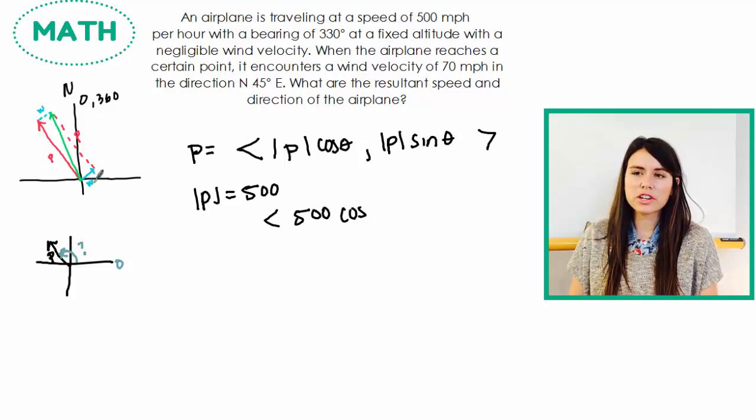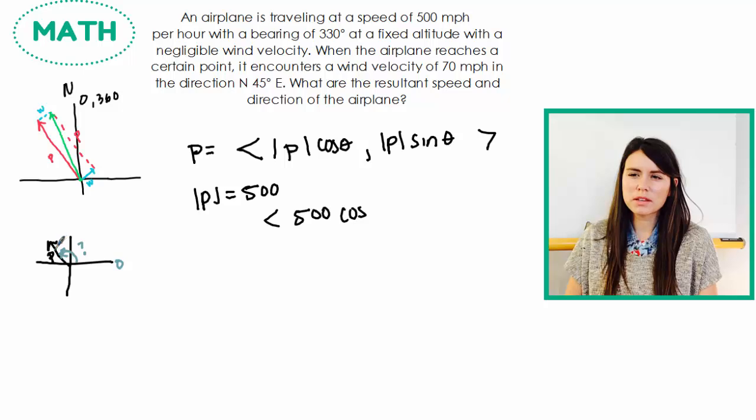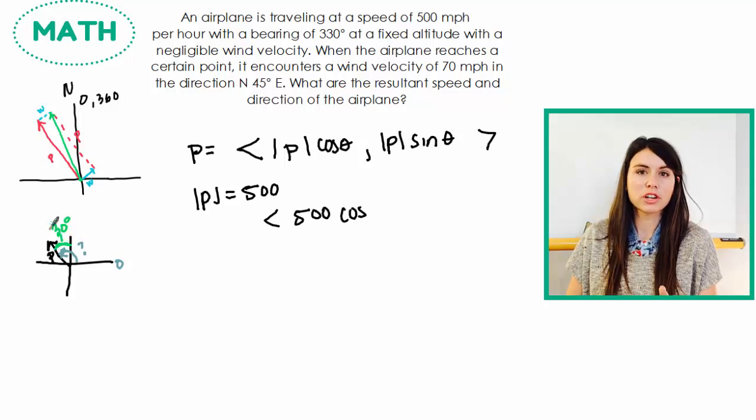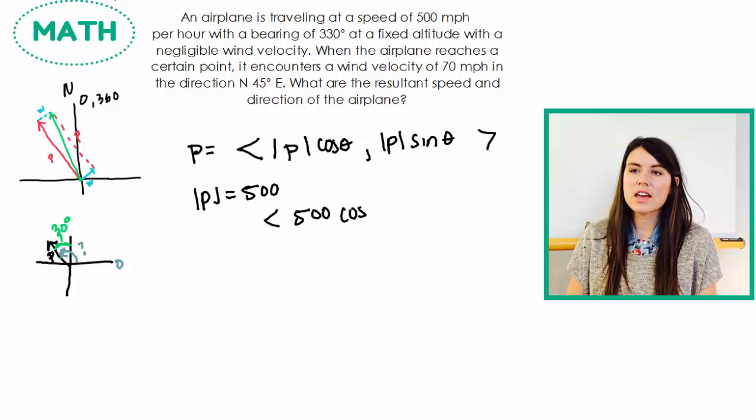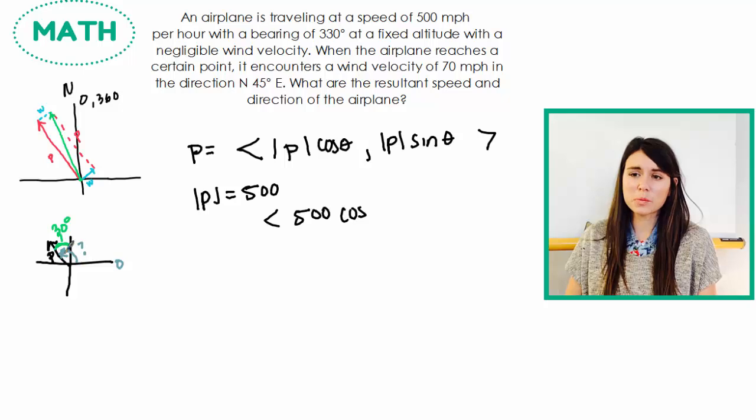So here's kind of the way I think of it. My bearing was 330 degrees. So this piece right here that I'm drawing in green, this is 30 degrees. Because I traveled 330 degrees and then to get back here to north, I would have had to go 30 more. So this portion is 30 degrees.